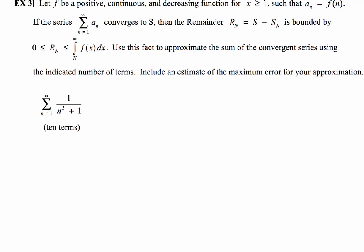So here we are in example 3, and it tells us, let f be positive, continuous, and decreasing function for x greater than or equal to 1, such that a sub n equals f of n. If the series converges to S and the remainder r sub n equals S minus S sub n is bounded by this particular expression here. Use this fact to approximate the sum of the convergent series using the indicated number of terms, which in this case is 10, and include an estimate for the maximum error for your approximation.